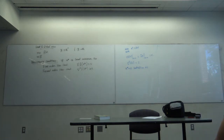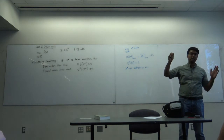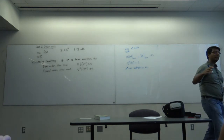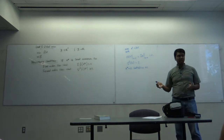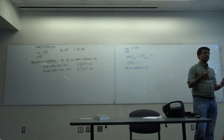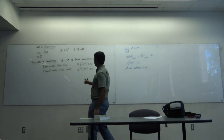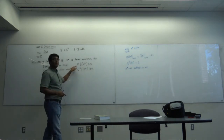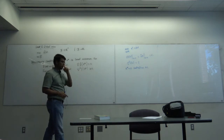Throughout this course we will always assume the function is at least twice differentiable. We are not going to talk about integer programming where x is a set of integers, because in that case we cannot define the derivative. When I say a matrix M is greater than or equal to 0, it means M is positive semi-definite. When M is strictly greater than 0, it means M is positive definite.